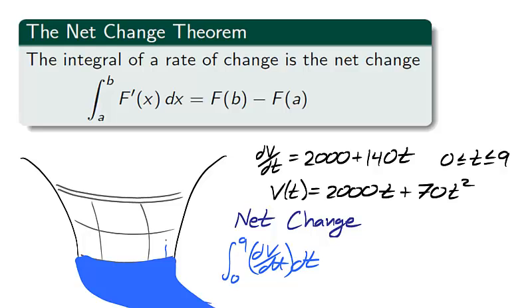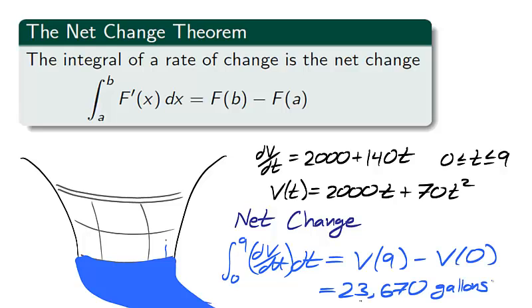The indefinite integral, or the antiderivative, is v. So the net change of water, the total number of gallons leaked over the 9 minutes, is 23,670 gallons.